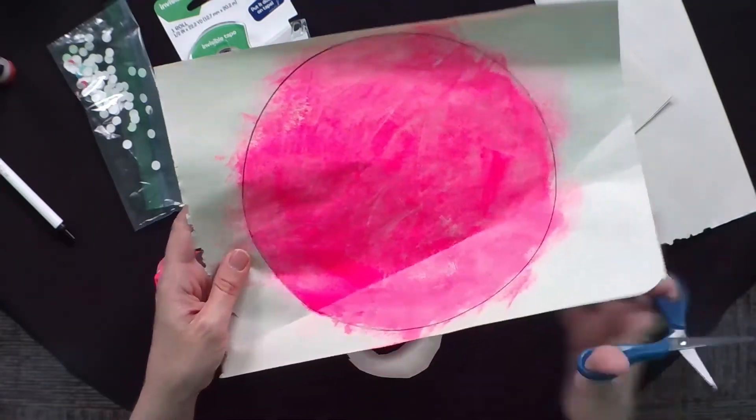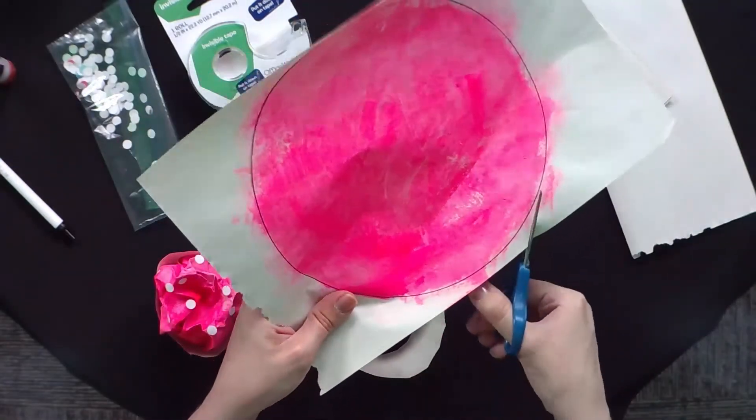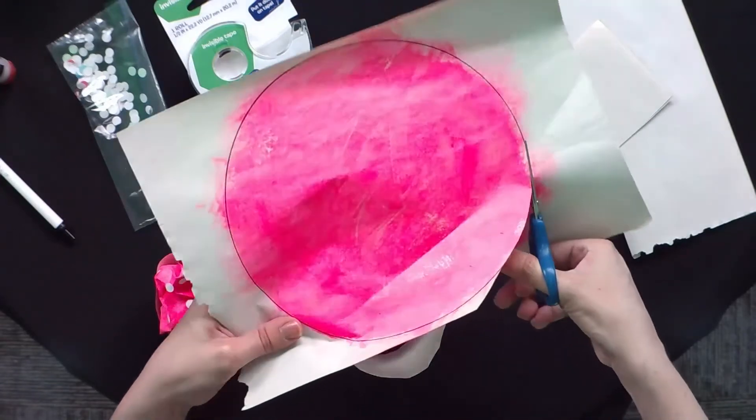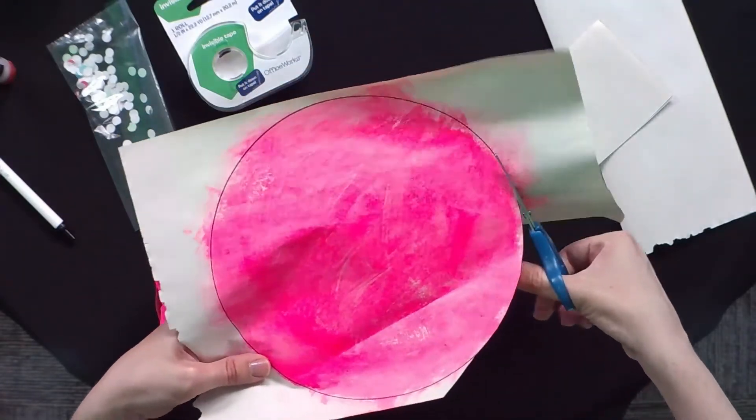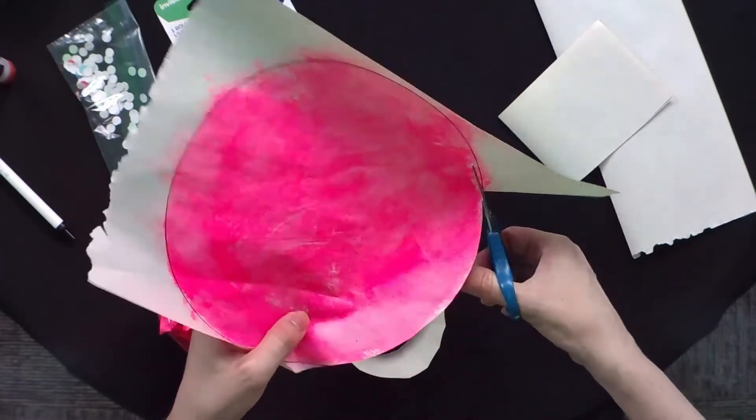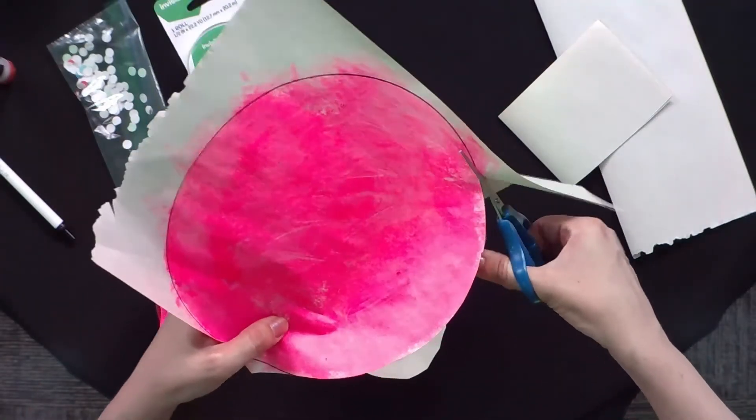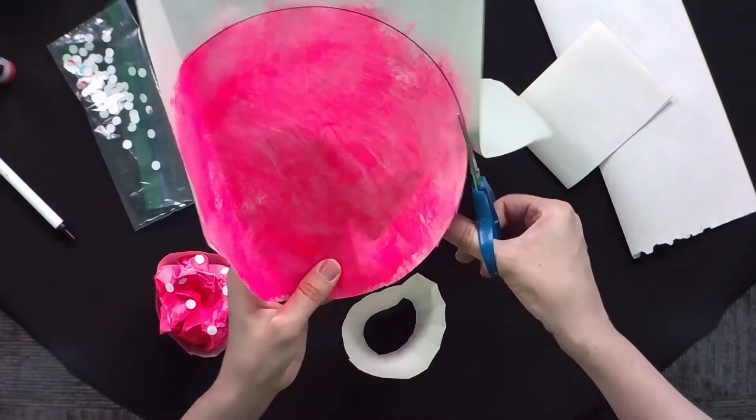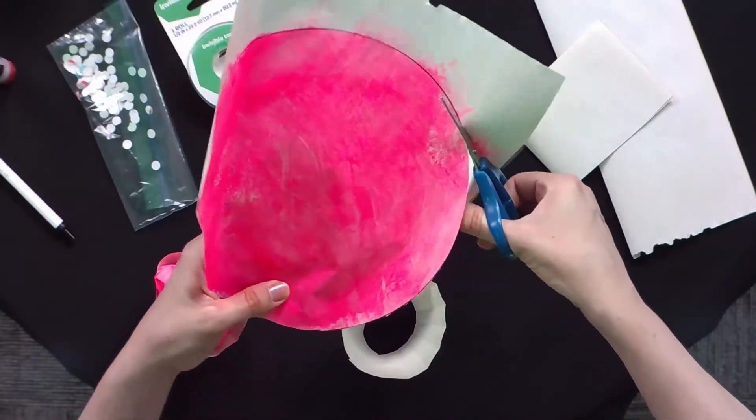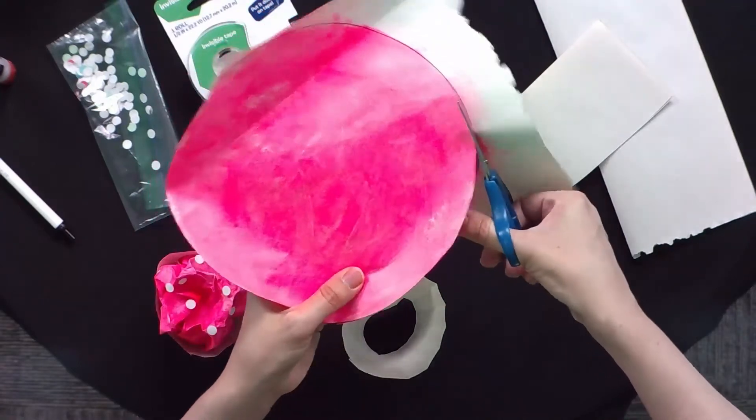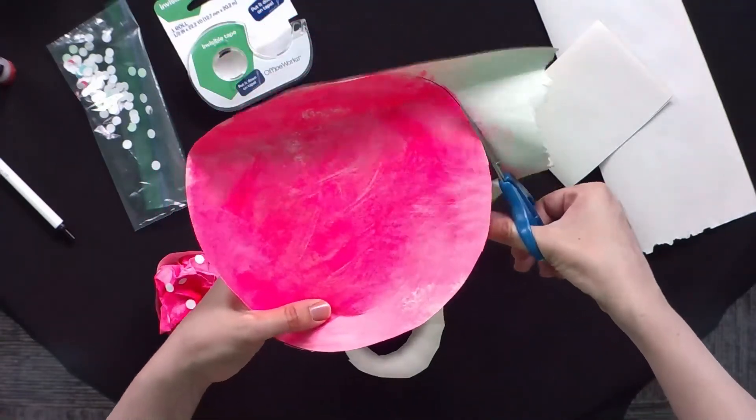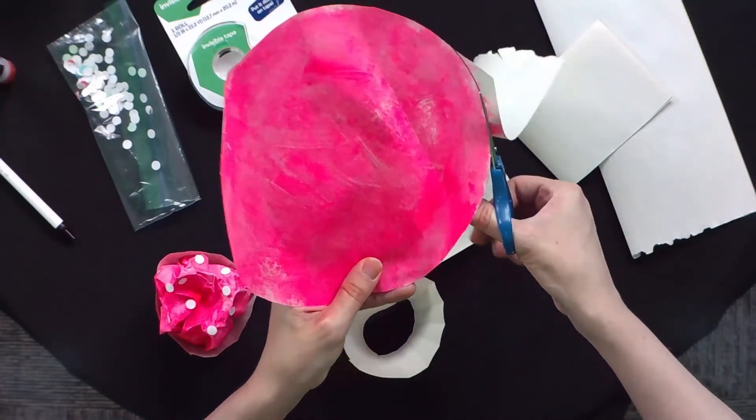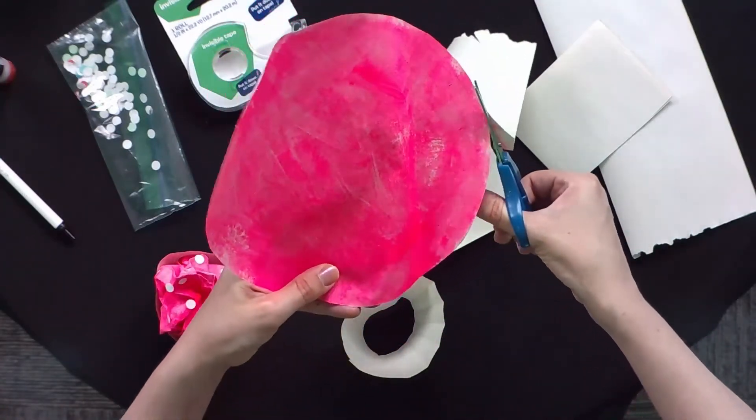So once you have that, I used a pen to trace it, just a regular ballpoint pen. That way it was really easy for me to see those lines of my circle. So when I cut it out, it's very easy. And again, it does not have to be perfect. It's okay if you cut it and it's a little uneven. No big deal. I just recommend doing it nice and big and you will see why right about now.